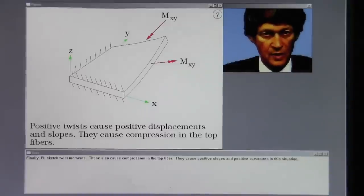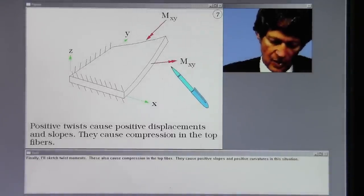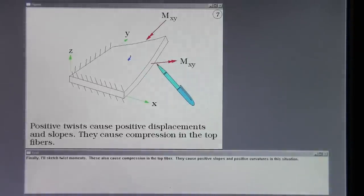Finally, I'll sketch twist moments. These also cause compression in the top fiber. They cause positive slopes and positive curvatures in this situation.